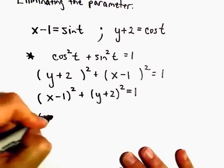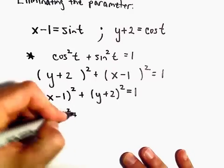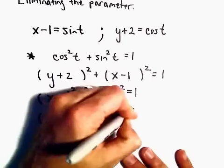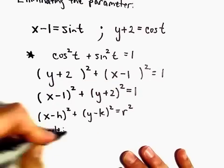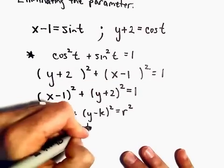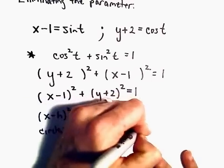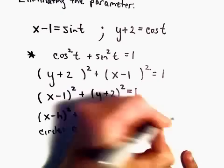if we have x minus h squared plus y minus k squared equals r squared, this is going to be the graph of a circle with a center of h k and a radius of r.